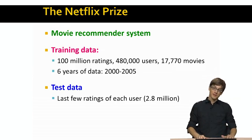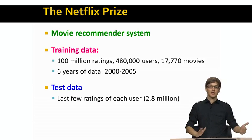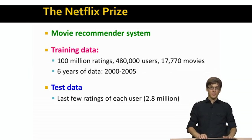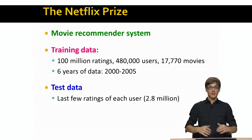Here is how the competition was structured. Scientists would get training data — a set of 100 million ratings from 480,000 users and around 17,000 movies. This is six years worth of data from 2000 to 2005. Based on this data, the idea is that we build a recommender system and then send these recommendations to Netflix, which would check our predicted recommendations against their test data set — a set of ratings that only Netflix has.